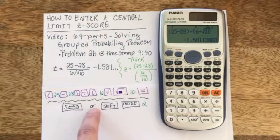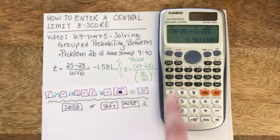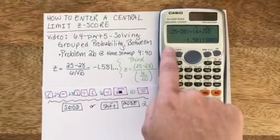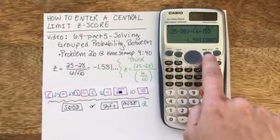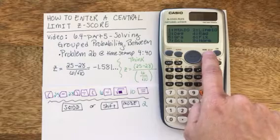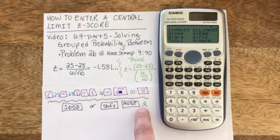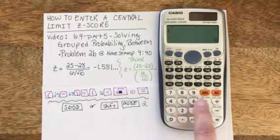The other option is just to change the configuration of your calculator. So if I hit the shift button on the top left and come over to this mode setup button, then what happens is I need to choose item 2, which is line IO.